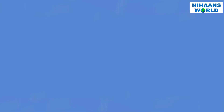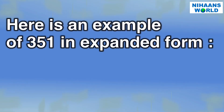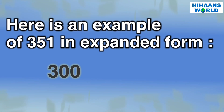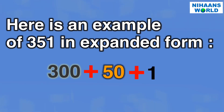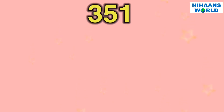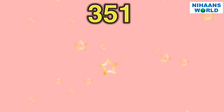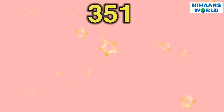Here is an example of 351 in expanded form: 300 plus 50 plus 1. As you can see, we took the number apart based on its place value position.